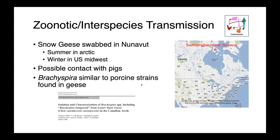One study I had the opportunity to conduct a few years ago looked at snow geese in Nunavut. These birds were swabbed in the Canadian Arctic, where they spend their summers, then fly south for the winter to the Midwestern United States — where there's a very large pig population and potential contact. We found Brachyspira strains very similar to porcine strains in these geese, potentially suggesting transmission. But we don't yet have a holistic understanding of exactly the role of these wildlife species in the epidemiology of this agricultural disease.